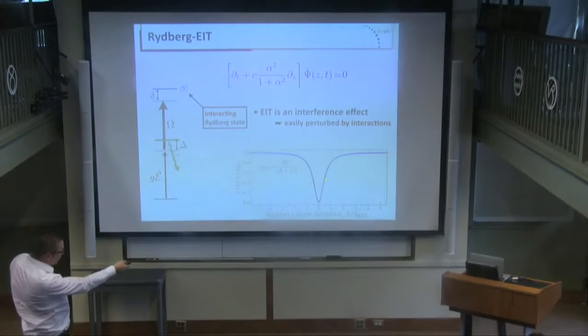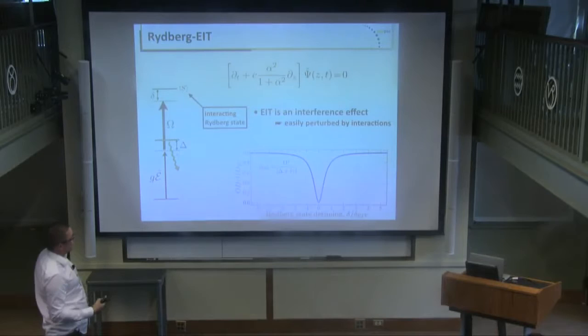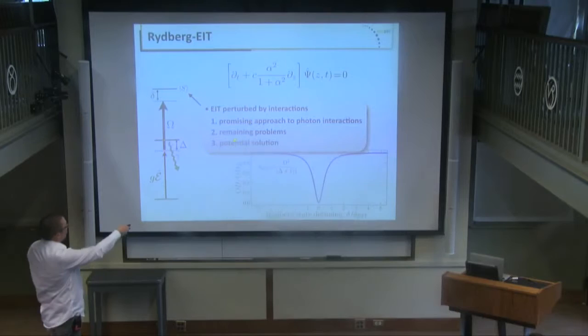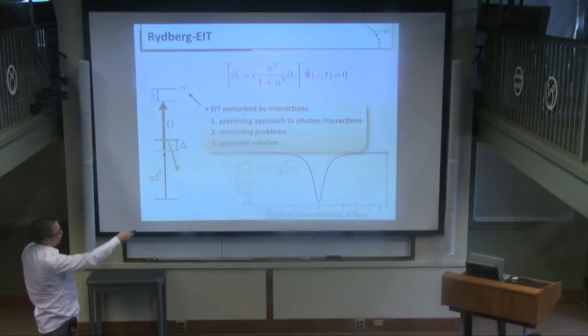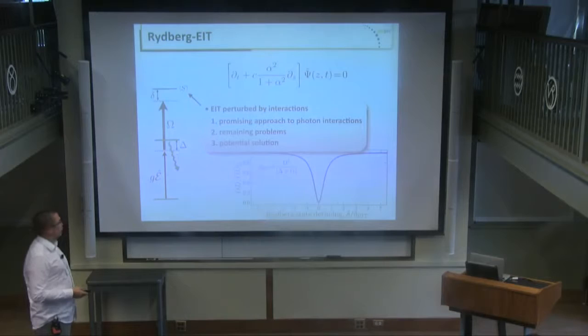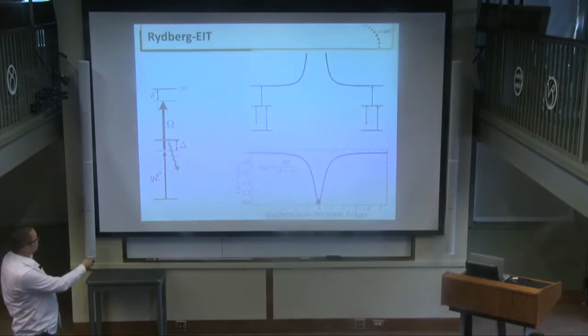Already from this fairly narrow linewidth you can see that EIT is a very sensitive effect, which makes it hard sometimes in experiments to get nice EIT. But in our case it's actually a good thing, because you can easily perturb this EIT by your interactions. That's the main point of this talk and the outline for the rest of what I will be discussing. First, I'll give a simple picture of why this is a promising approach to induce strong interactions dissipatively. Then I'll point out some problems — this is actually not as great as we thought a few years ago. And finally I'll show a potential solution that might make these interactions useful for applications.